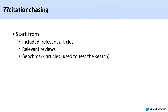When performing citation chasing, we can start from a number of different points. For example, we could wait until we've screened our articles and use the final set of included studies to then perform forwards and backwards citation chasing. We might also find a list of relevant reviews that we won't include in our synthesis, but we might want to scan their references. And we could also start with a benchmark list of articles to perform citation chasing.